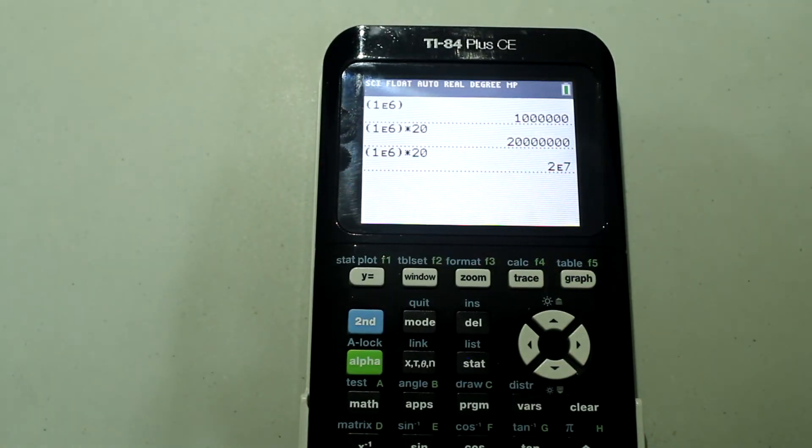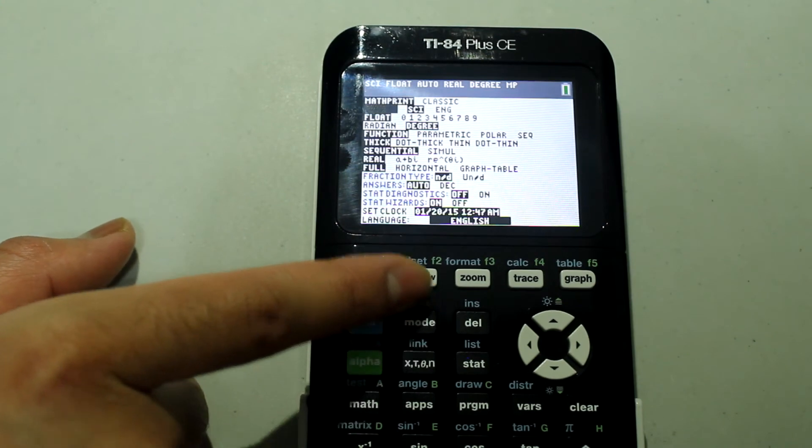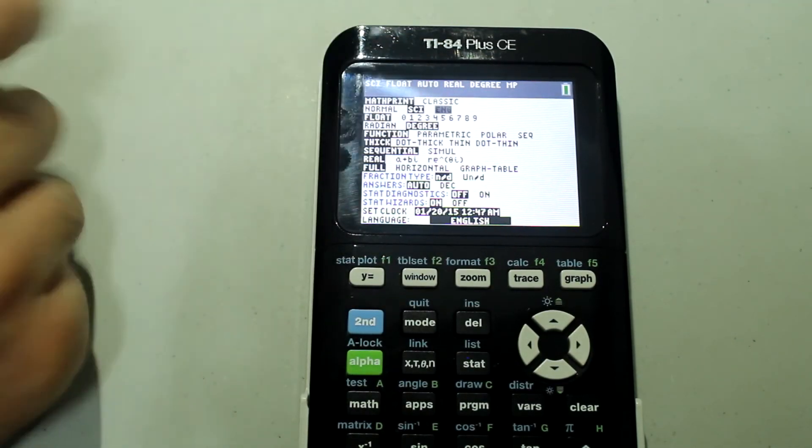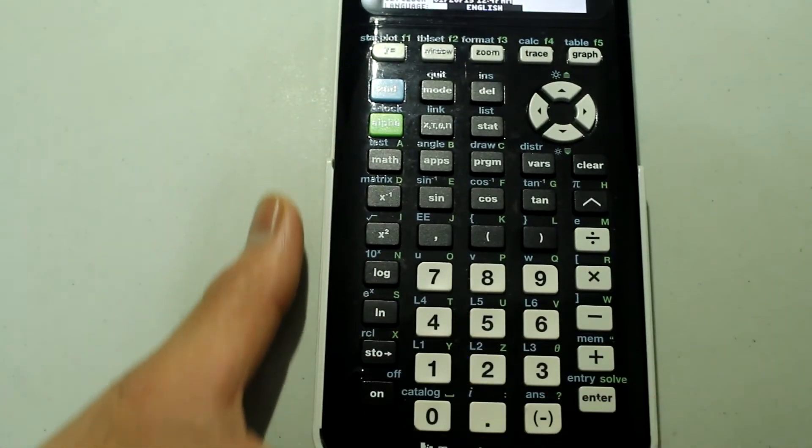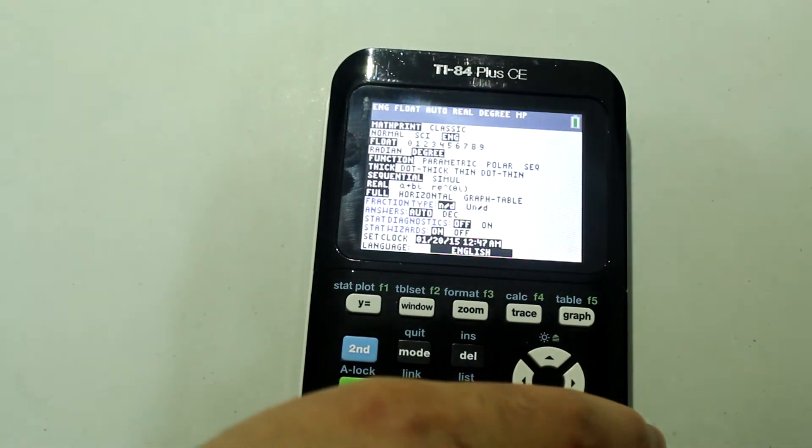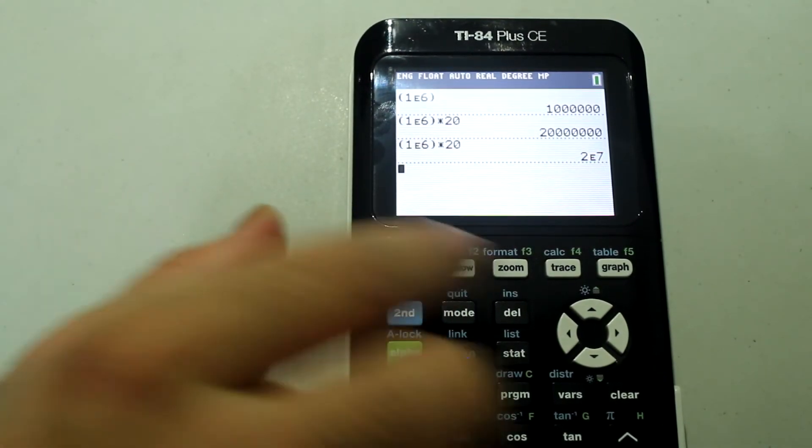Now, if you're working with units, having your answers displayed in engineering notation is sometimes a lot easier. So I'm going to go to mode. And this time I'm going to arrow right until the cursor is on ENG for engineering notation. And I'm going to press enter. So now ENG is highlighted in black. And then I'm going to press second mode to quit.